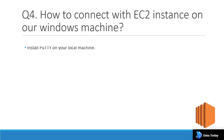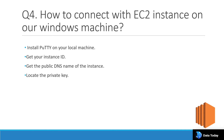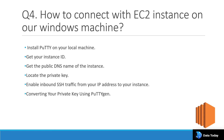A common interview question is: how do you connect to EC2 from your Windows machine? The answer is: you can use PuTTY, a third-party tool, installed on your local machine. Get the instance ID from the AWS console, get the public DNS name of the instance, locate the private key, and enable inbound SSH traffic from your IP address in your security group.